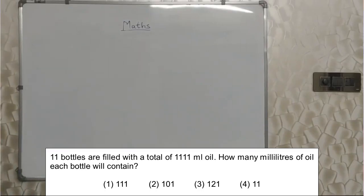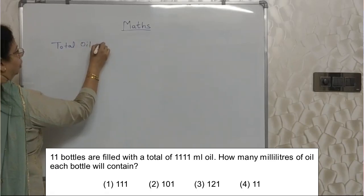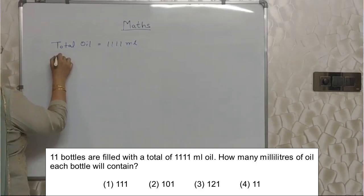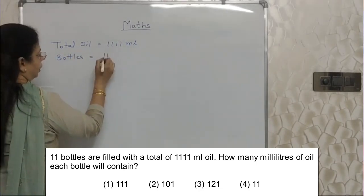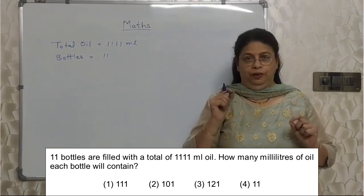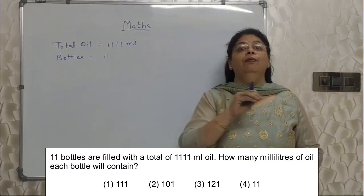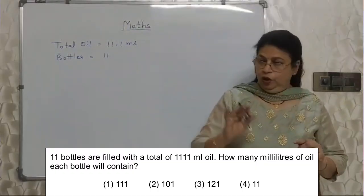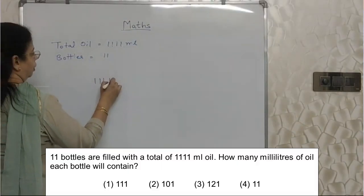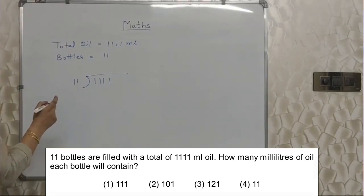Students, read the next sum. 11 bottles are filled with a total of 1111 milliliters of oil. How many milliliters of oil will each bottle contain? Total oil is 1111 ml, and there are 11 bottles. I have deliberately taken this sum because students make mistakes in this division. When we distribute anything equally, we need to divide — so 1111 divided by 11.